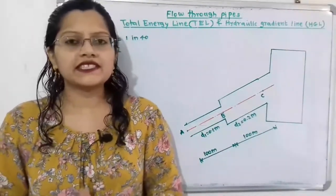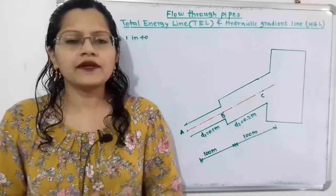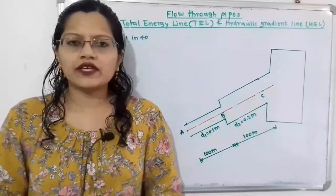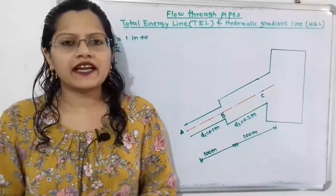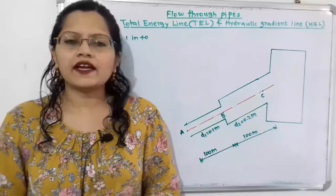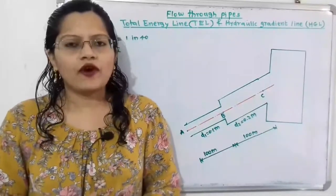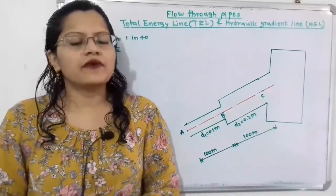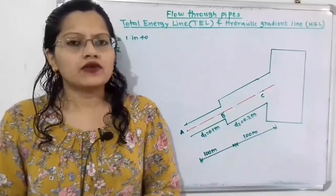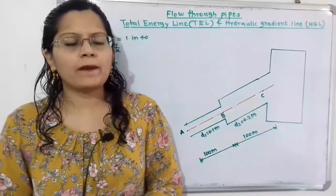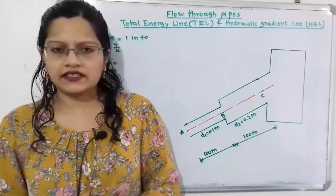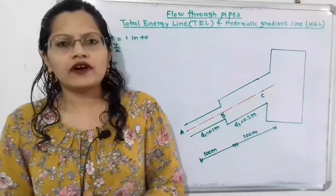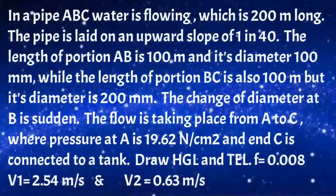Hello friends, this is Priyanka. Today we are going to solve a problem on hydraulic gradient line and total energy line for a system where two different cross-section areas of pipe are connected with a tank at the exit. First I will read what is the given problem.